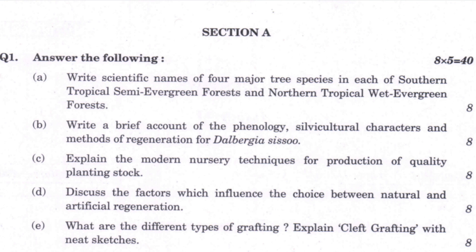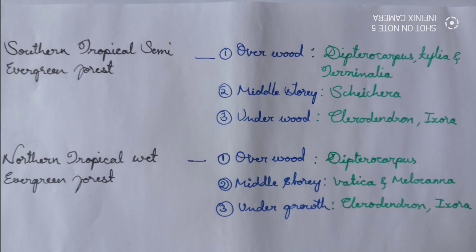As of now we have answers for only five questions, but going forward we will deal with the remaining. The first question asks to write scientific names of four major tree species in each of southern tropical semi-evergreen forest and northern tropical wet evergreen forest. These two forest classifications are done by Champion and Seth in 1964. For southern tropical semi-evergreen forest, examples are Dipterocarpus, Chilea, and Terminalia under overwood; Slashera under middle story; Clerodendron and Ixora under underwood. For northern tropical wet evergreen forests: Dipterocarpus for overwood, Vatican and Melocana for middle story, Clerodendron and Ixora for undergrowth.